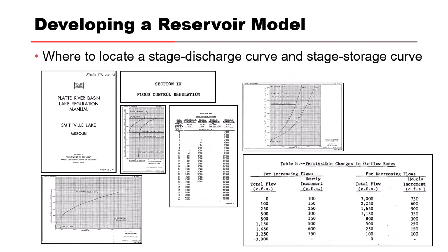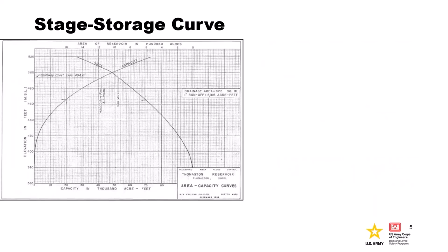To develop a reservoir model, most water control manuals — especially for Corps projects or Bureau of Reclamation projects — include plates and figures that specify how discharges can be released from the structure, and that's always the first place to check. These documents often have elevation versus area and elevation versus storage curves, which define the physical geometry of the reservoir. These are important because they tell you for a given change in elevation how much storage changes, which is needed during the reservoir routing computation.